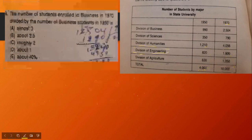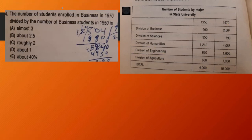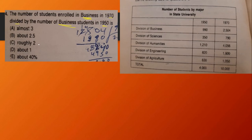The next question asks about the number of students enrolled in business in 1970 divided by the number of business students in 1950. The options are: almost 3, about 2.5, roughly 2, about 1, or about 40%. Let's look at the business division — we need the 1970 value divided by the 1950 value.